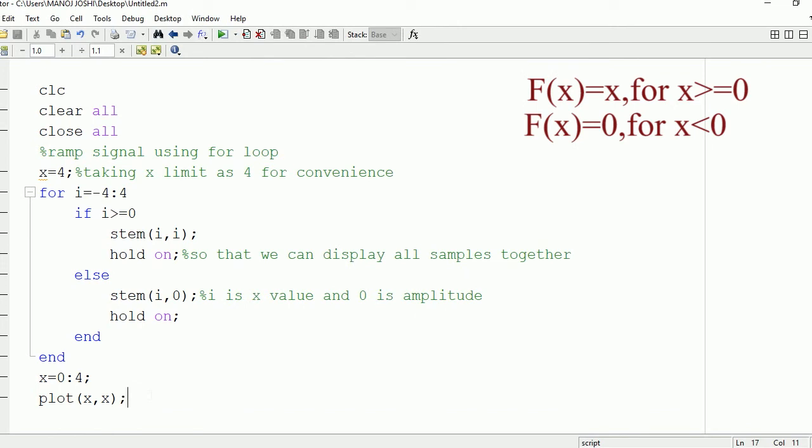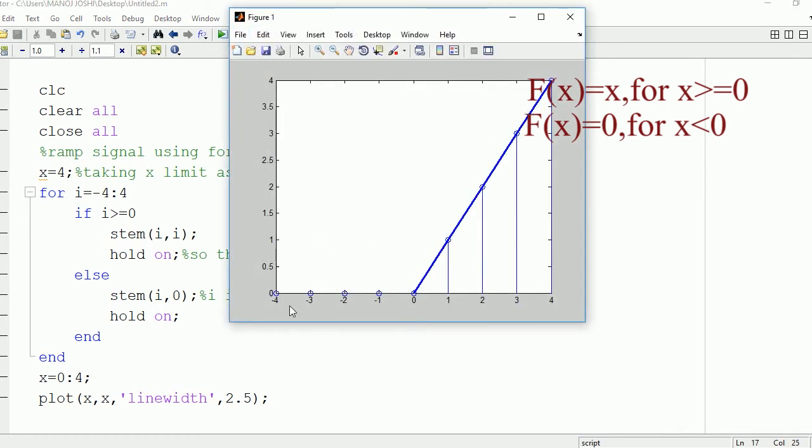Now if you want to change the width of this particular line, this can also be done. You just need to modify this plot command and write 'linewidth' and the width you want. Suppose I want 2.5, so I will write 2.5. And here we can see the width has been changed and the line has become bold. Thanks for watching.